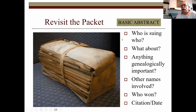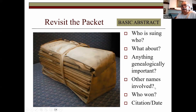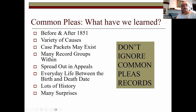Revisiting how to analyze a case packet: you need to know who is suing whom and what the case is about. Look and see if there's anything genealogically important — does it place your ancestor in a particular community at a certain time? Does it give their occupation? Does it connect a wife to her husband? Does it name children, brothers, sisters, cousins, neighbors, friends, associates? Are relationships described in the case? Can you use those names in other records? Who won the case? Sometimes it's hard to determine because the case may have moved from Common Pleas to the Supreme Court level. And always list your citations, dates, and so on.